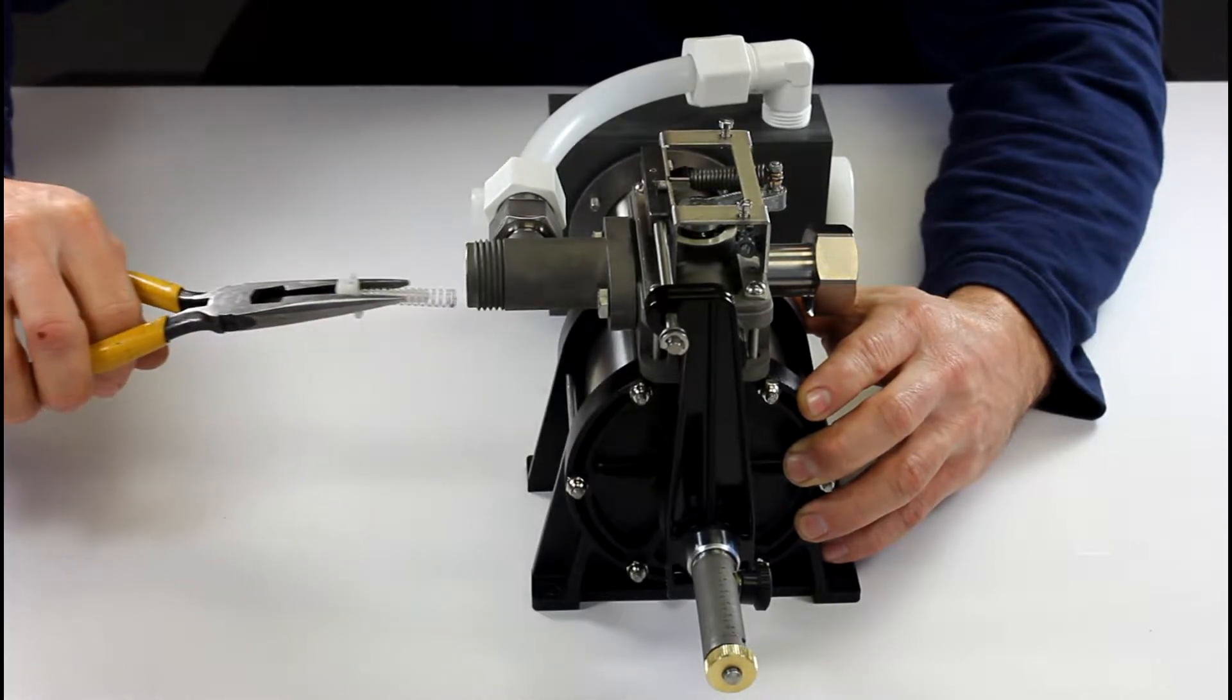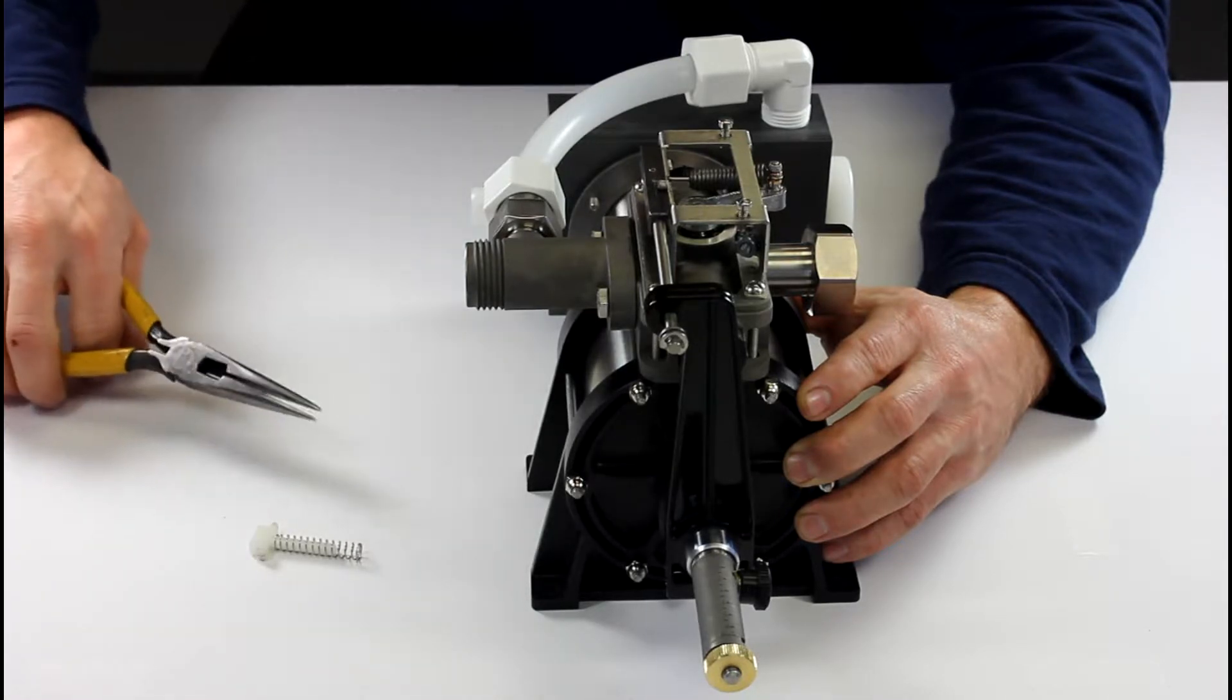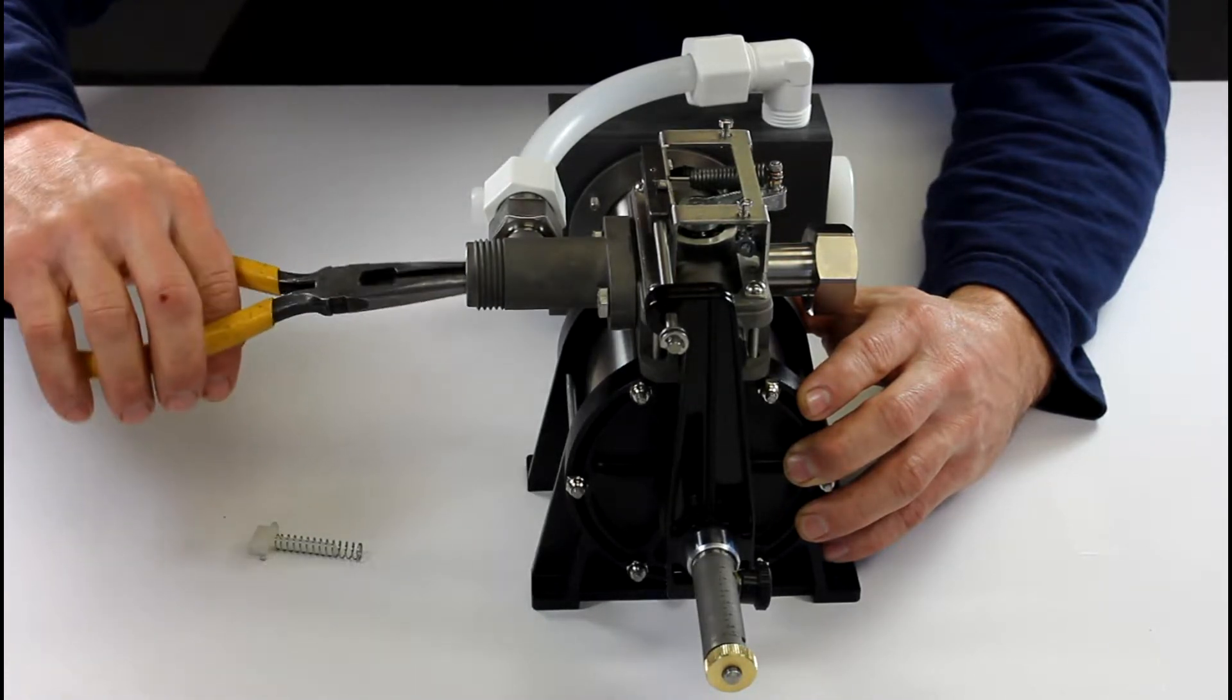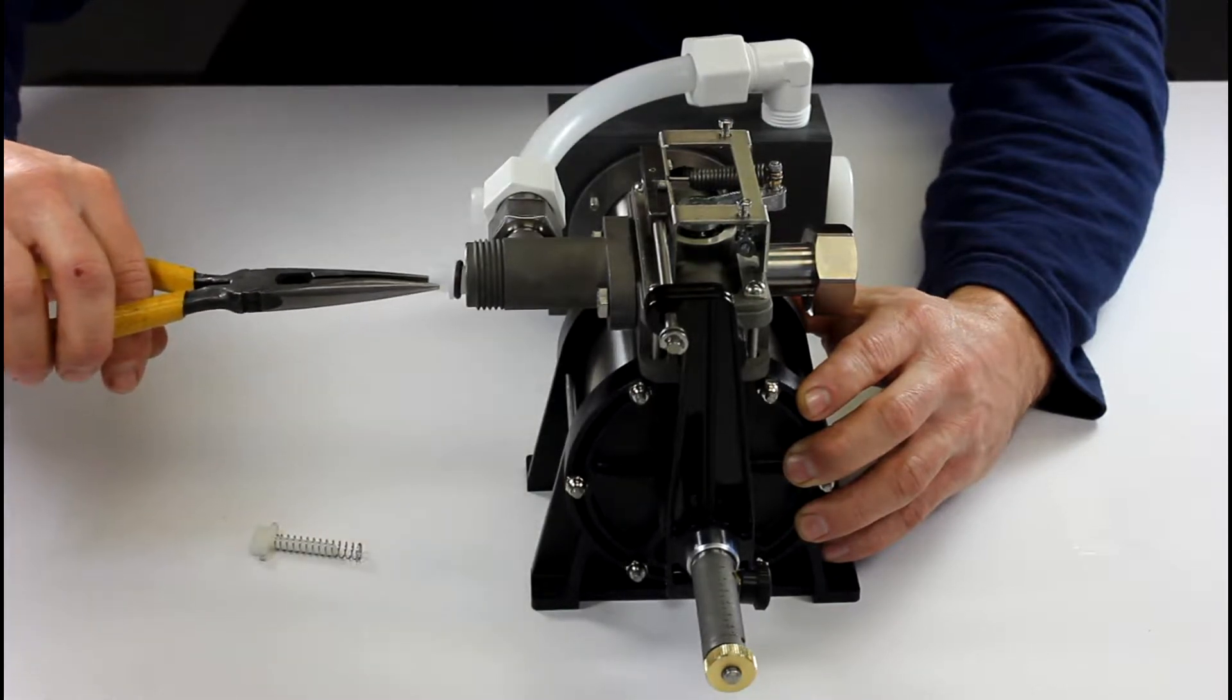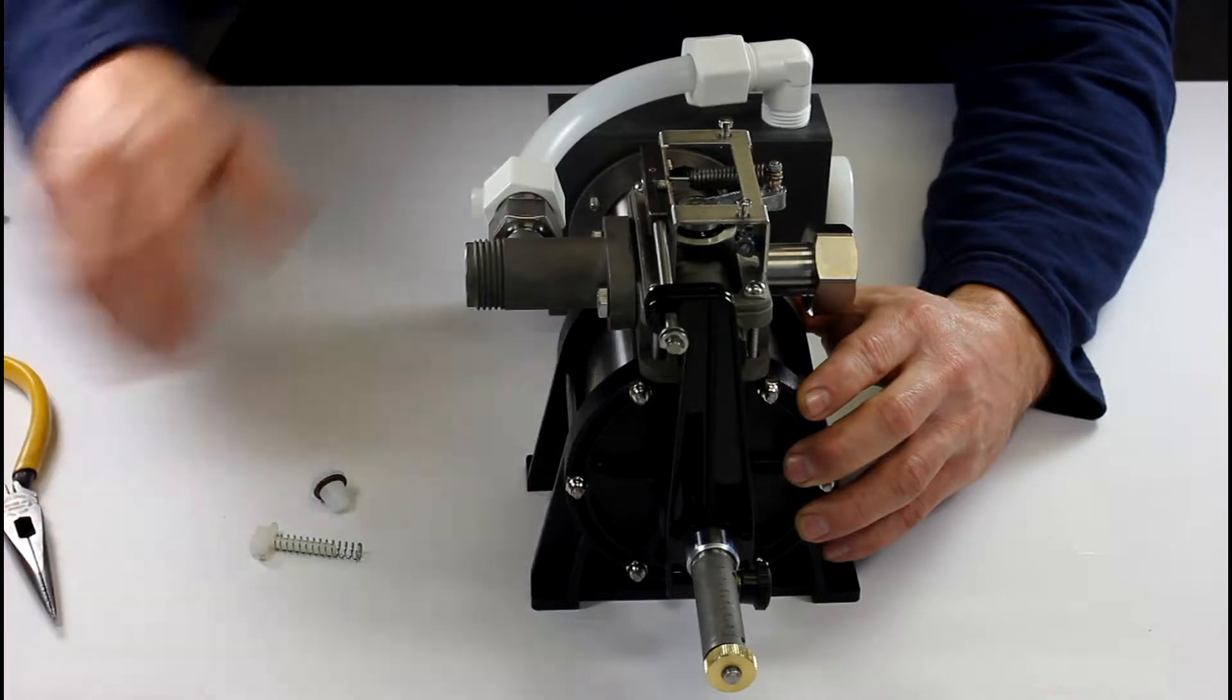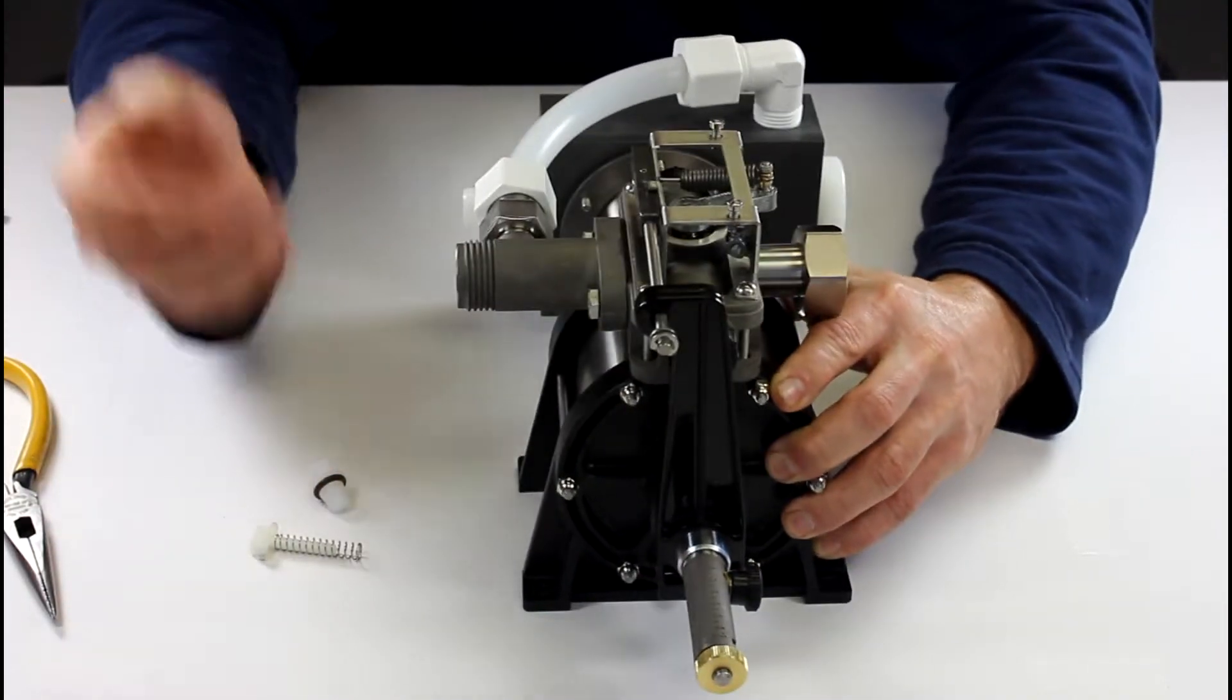Wiggle it, pull it out. As you see there's a spring on there so you want to make sure you don't lose that spring. Reach in with your needle nose and grab the poppet, pull that out.